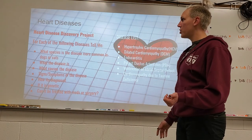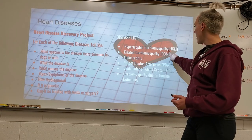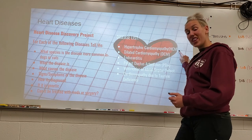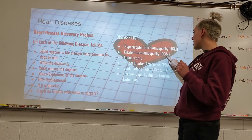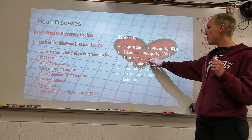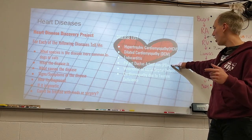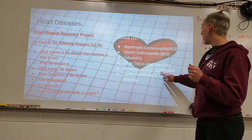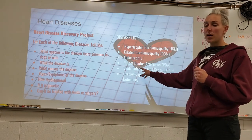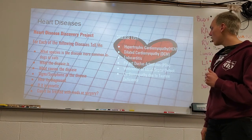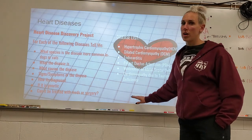The final part of this unit is the Heart Disease Discovery Project. Research the following diseases: hypertrophic cardiomyopathy (HCM), dilated cardiomyopathy (DCM), endocarditis, patent ductus arteriosus (PDA), ventricular or atrial septal defect, and cardiomyopathy due to taurine deficiency. For each disease, identify which species it's more common in, what it is, what causes it, signs and symptoms, how it's diagnosed, whether it's genetic, and whether it can be treated with medication or surgery.